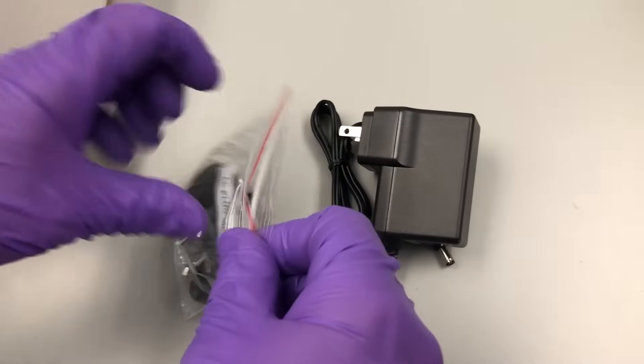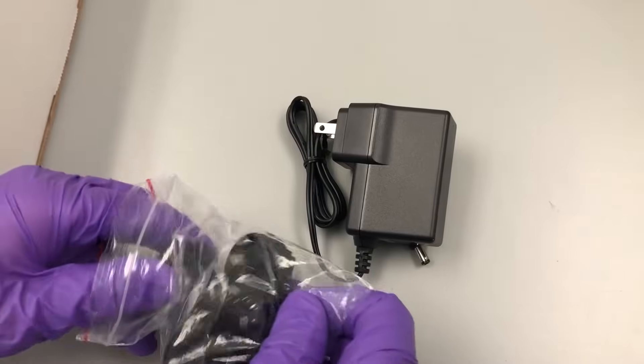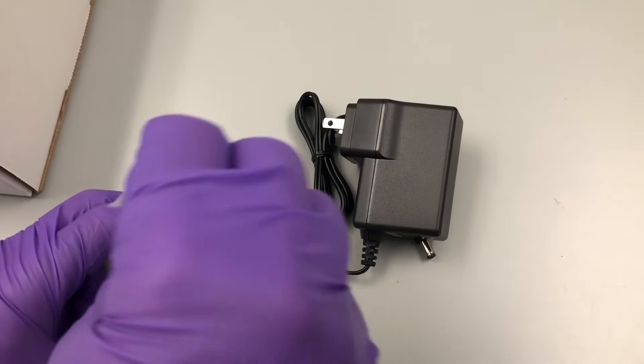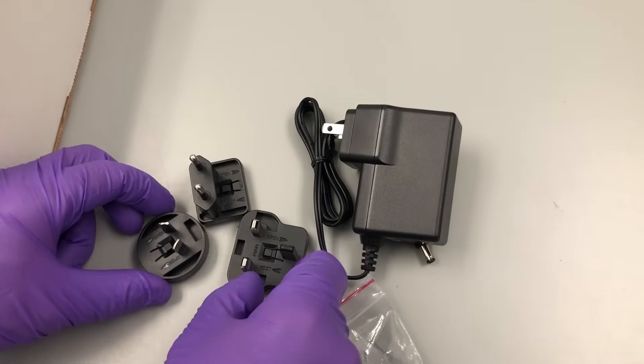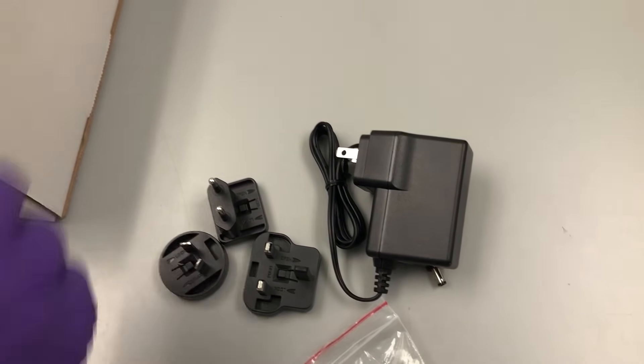The photoredox box also includes an international power adapter for the integrated fan unit which includes three additional adapter clips for type C, type G, and type I outlets.